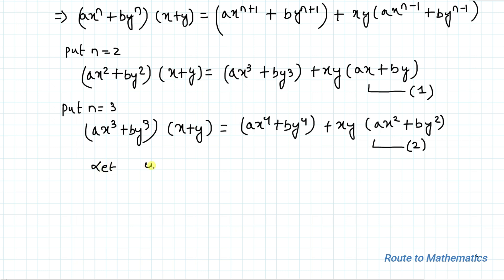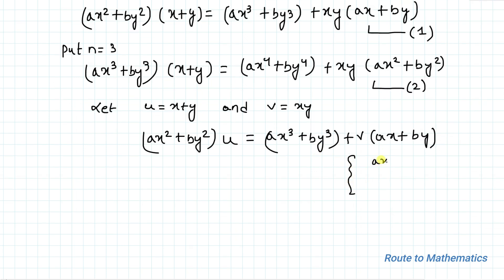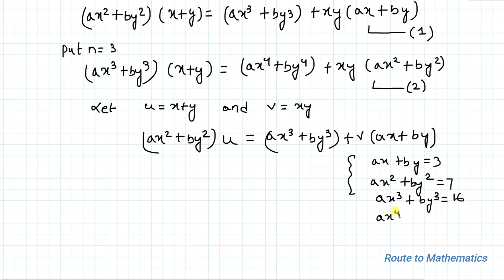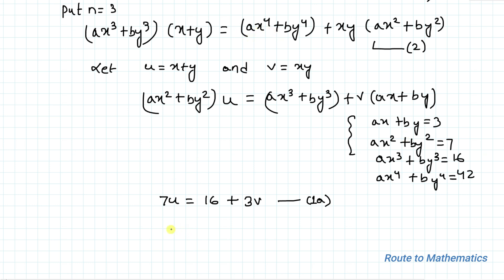Now let's take u equals x plus y and v equals xy. Substituting all the known values into equation 1, we get 7u equals 16 plus 3v. Let's call this equation 1a. Similarly, substituting all values into equation 2, we get 16u equals 42 plus 7v. Let's call this equation 2a. So we have two equations in u and v.